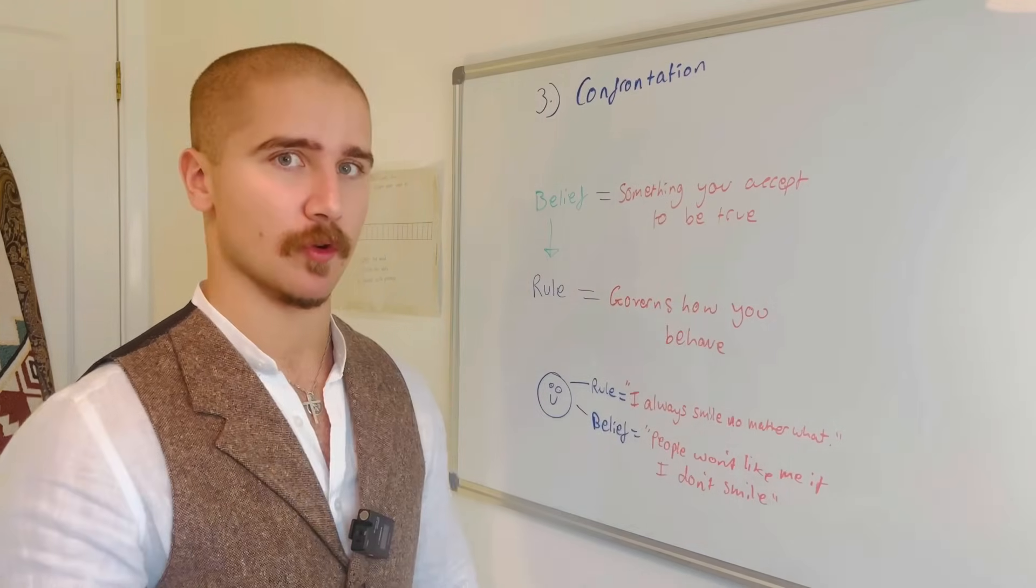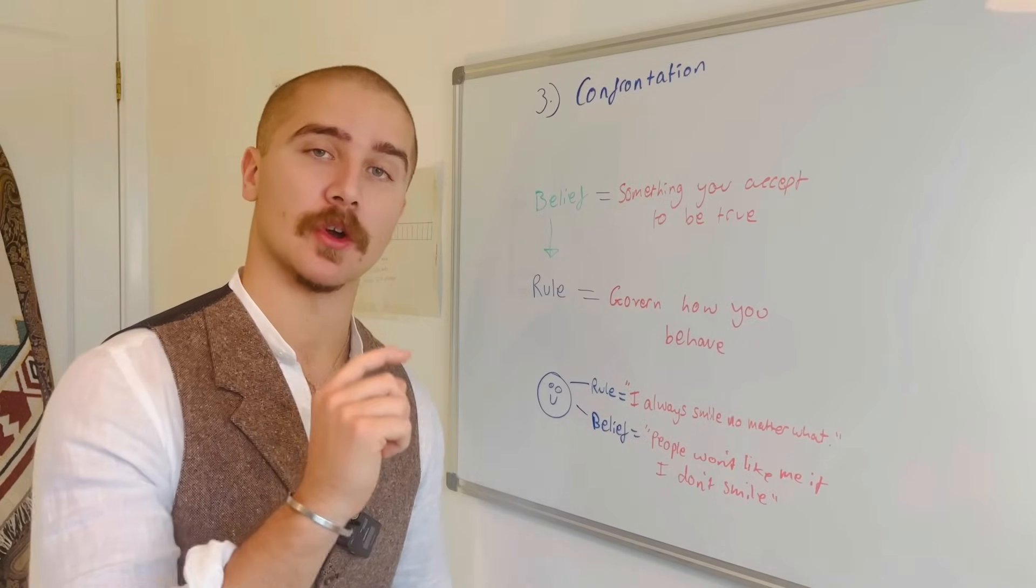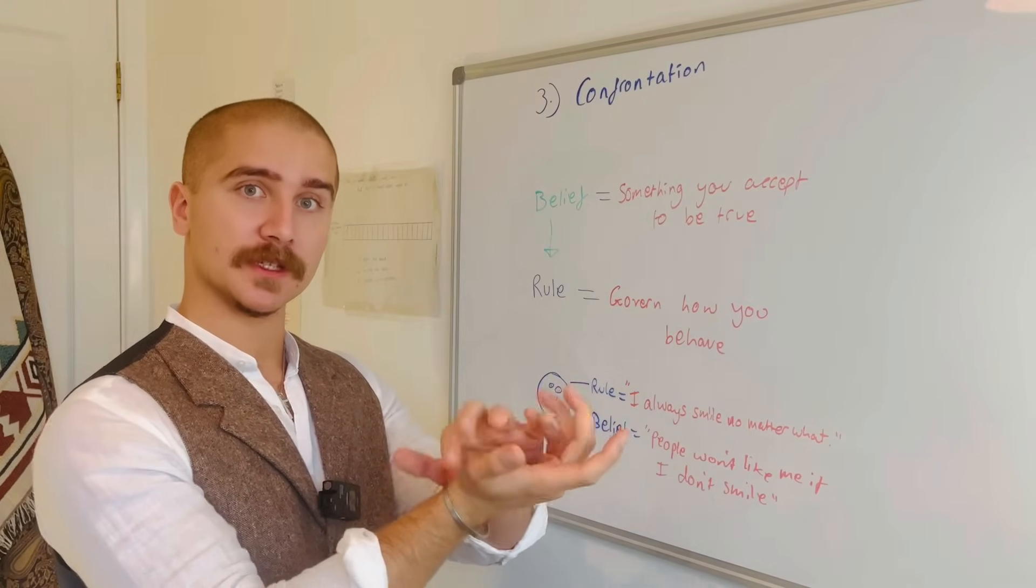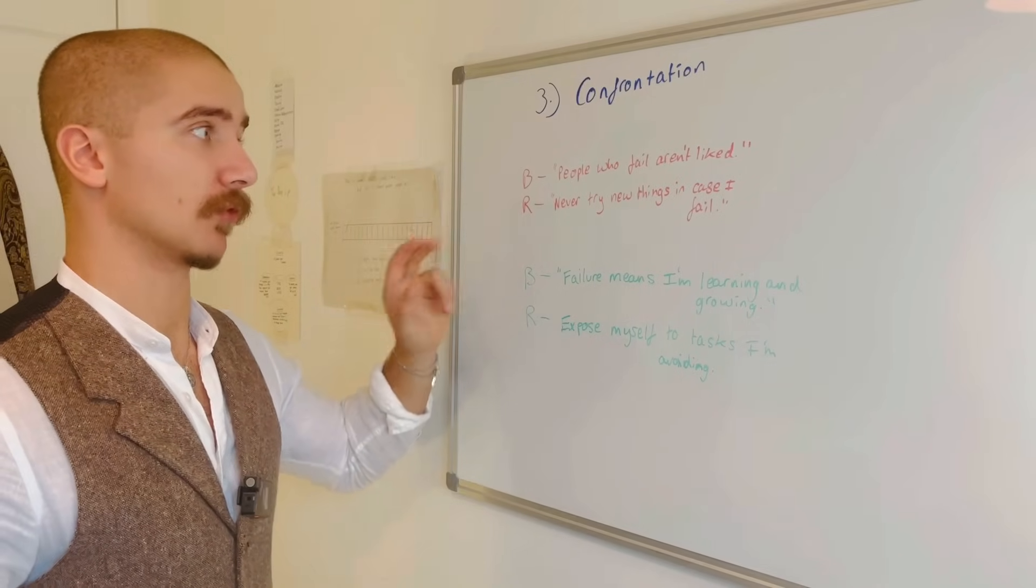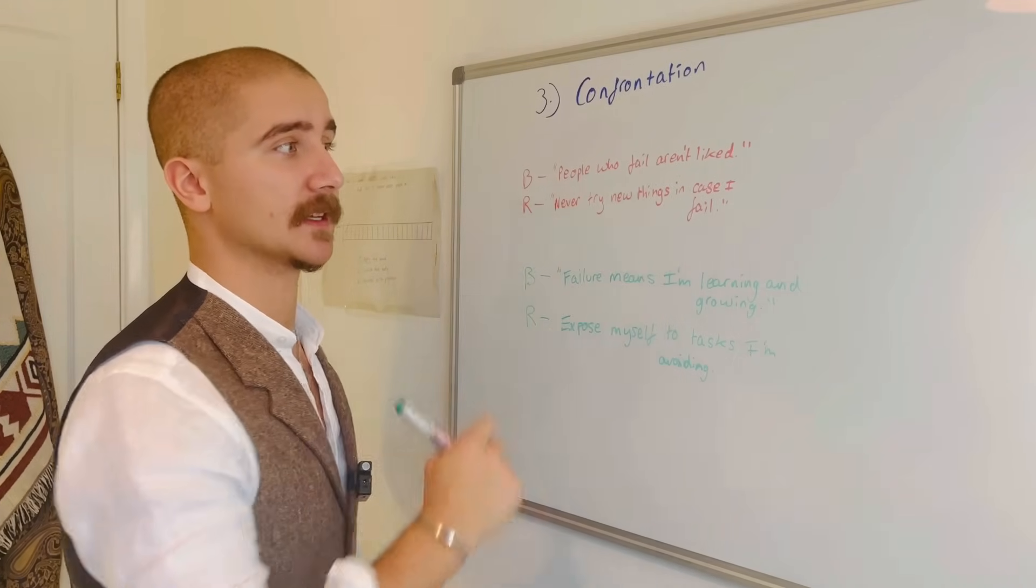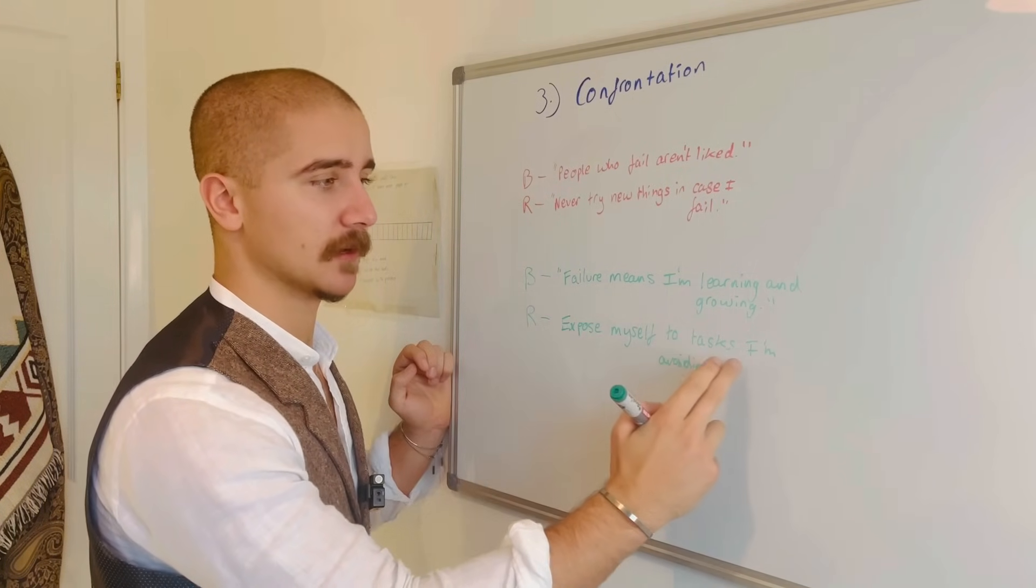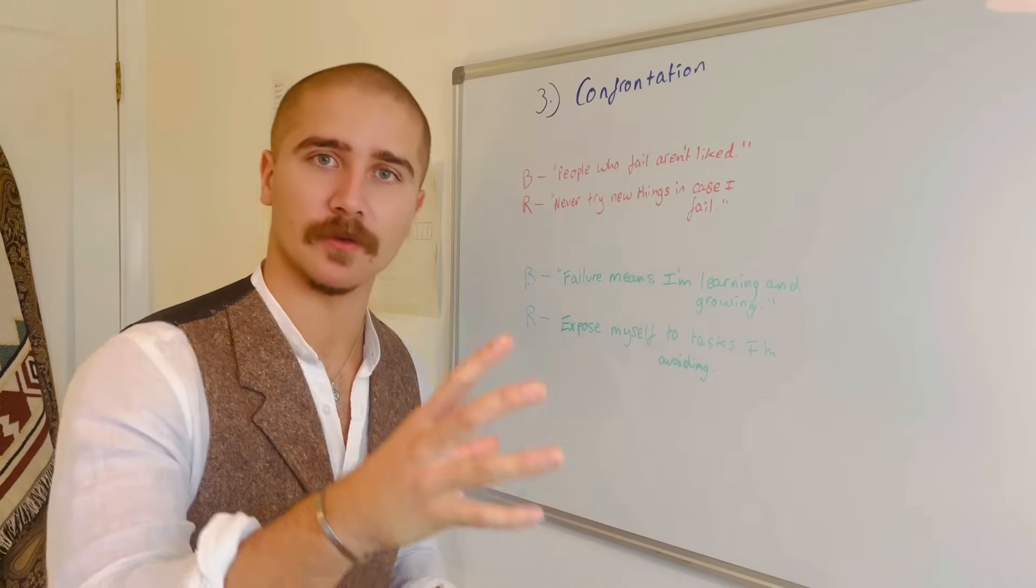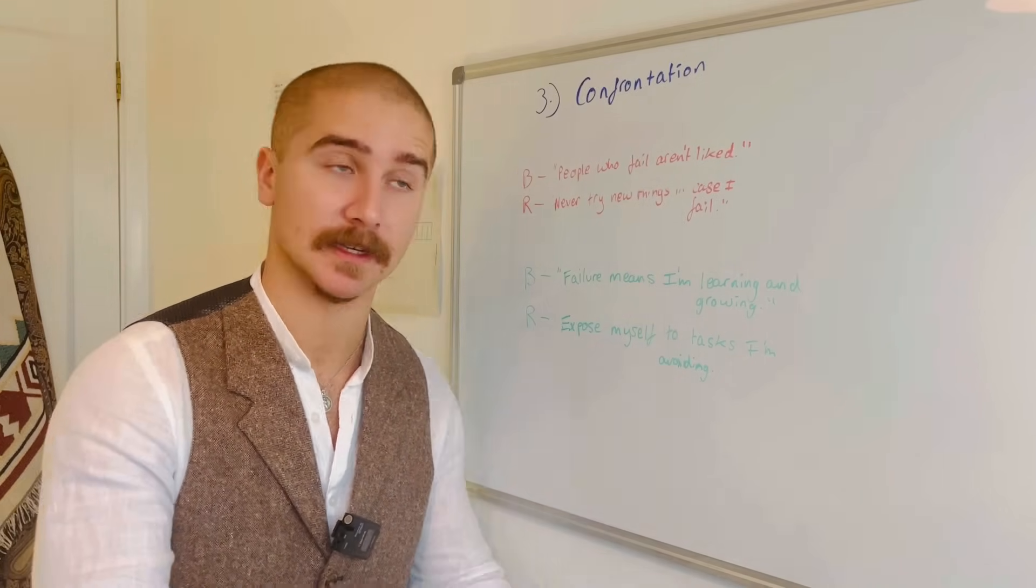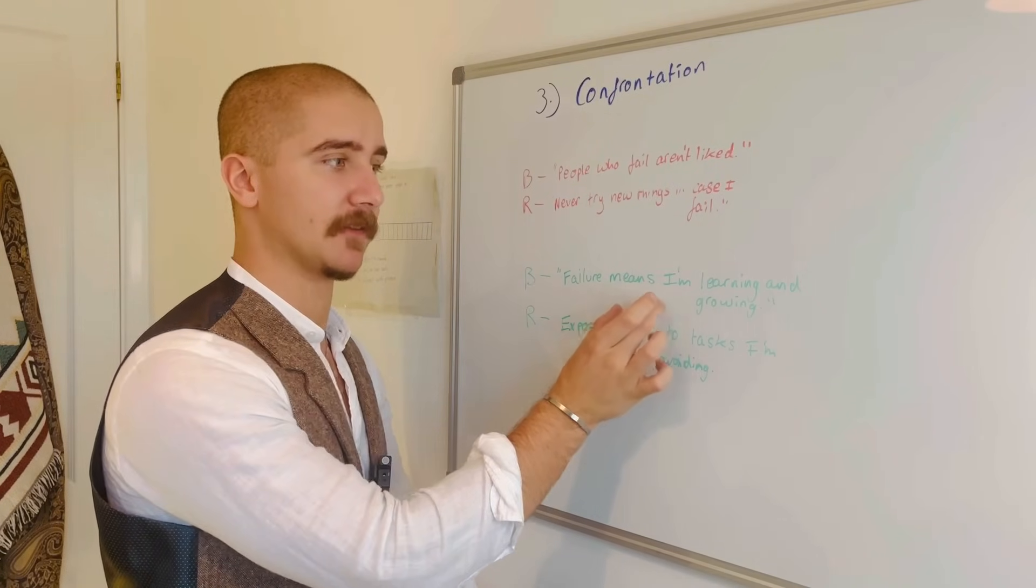In this sequence, you want to outline all of the beliefs and rules underlying your perfectionism which have been governed by your culture, society, or your own mental programming. Beliefs are something you accept to be true. Your rules govern how you behave. For example, you might have the rule that I always smile no matter what, because your underlying belief is people won't like me if I don't smile. The key in this part is you want to replace your unhealthy beliefs with more beneficial ones. One more example: the belief that people who fail aren't liked leads to the rule never try new things in case I fail. Now you've highlighted them, replace them. The new belief becomes failure means I'm learning and growing. Your rule is expose myself to tasks I'm avoiding. Over a few weeks, catch yourself in those perfectionistic ruts to highlight what belief you're feeding into, what rule you are governing. Write them down, capture them, and replace them for the mental programming you would like to see flourish.